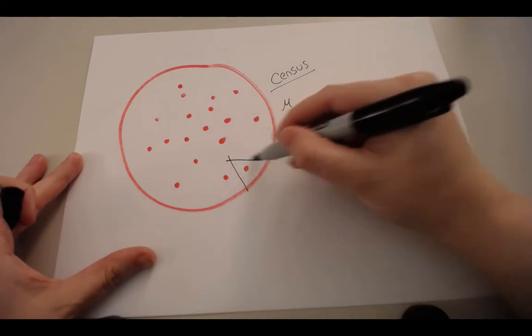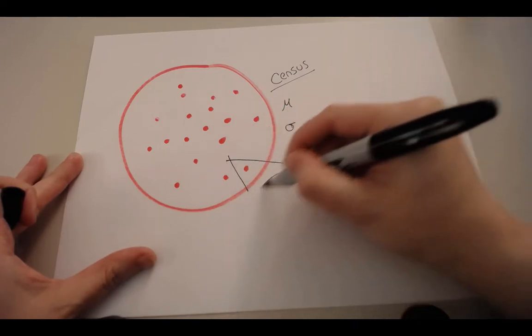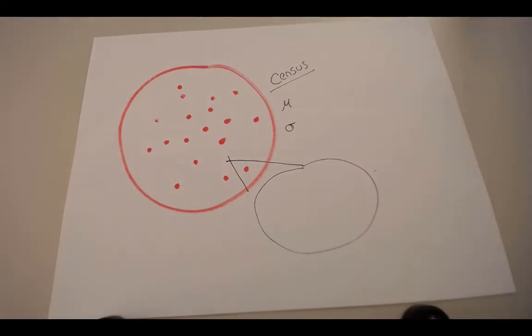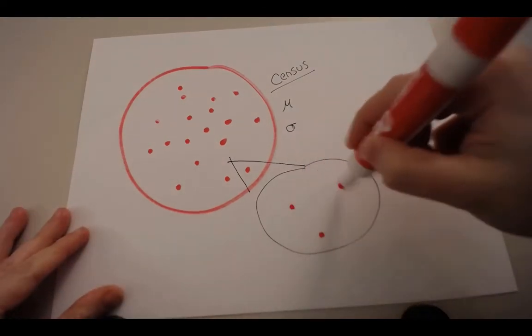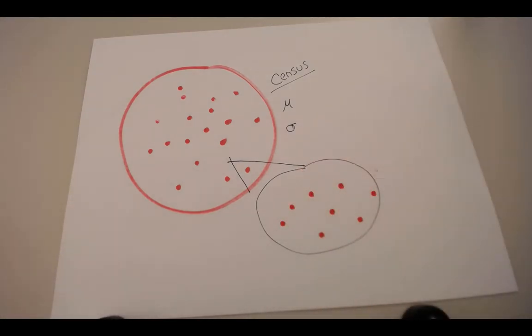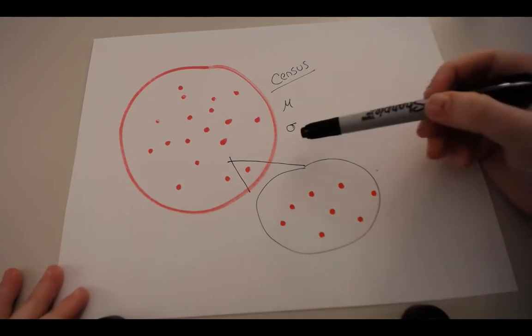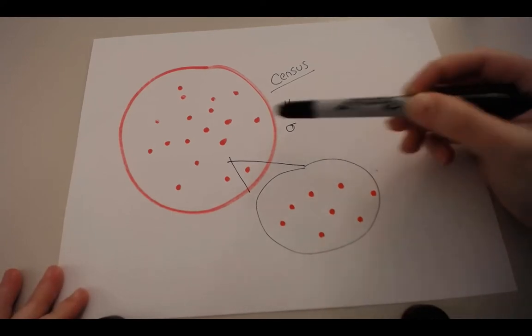So instead, what all research is based on is about drawing a sample out of your population and just taking a few humans in that sample. When we have a sample, we don't know this variance for the population.